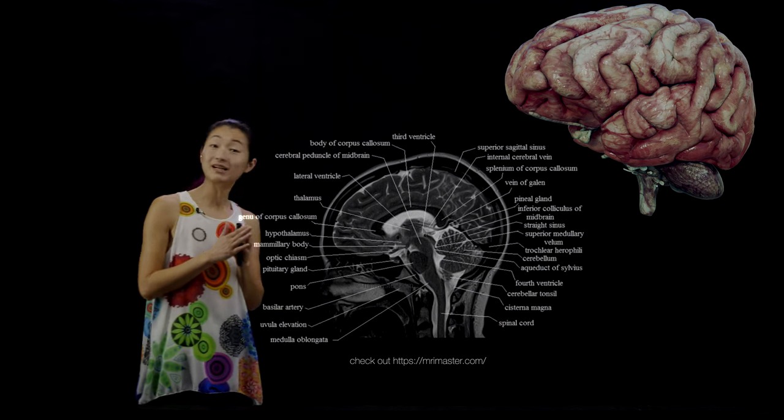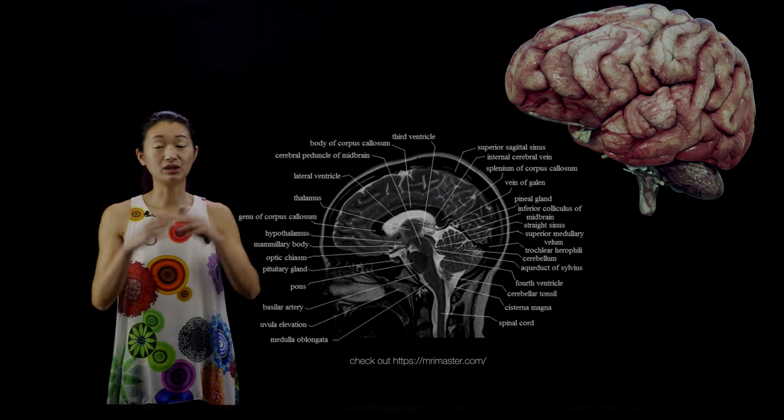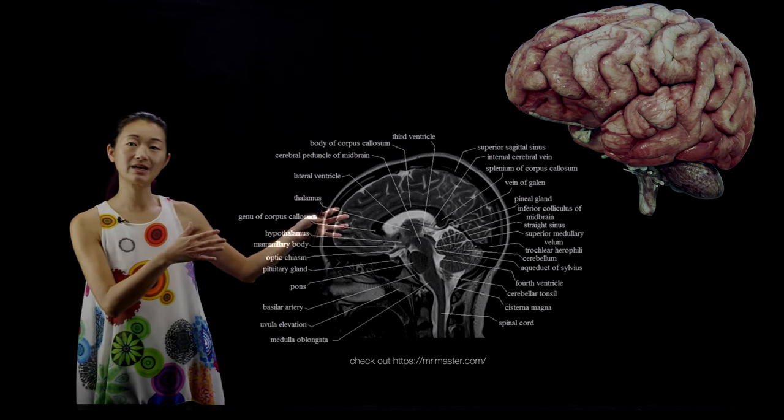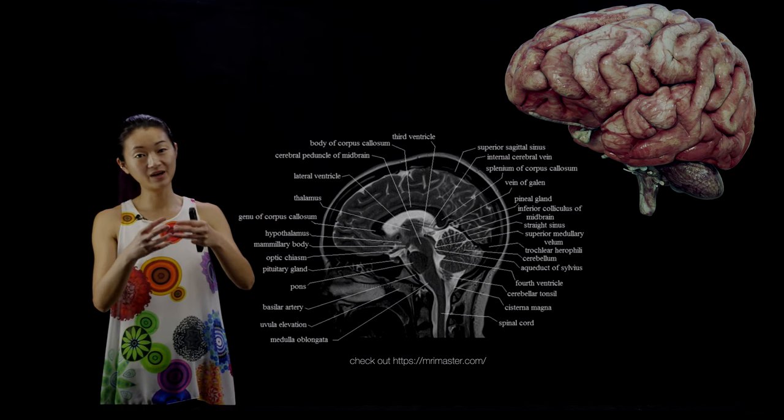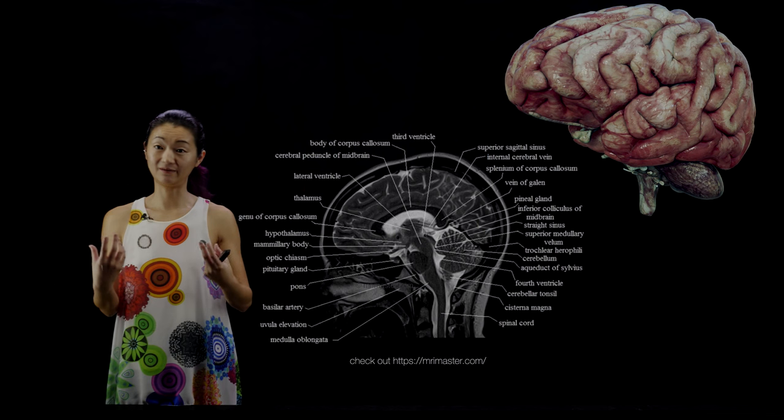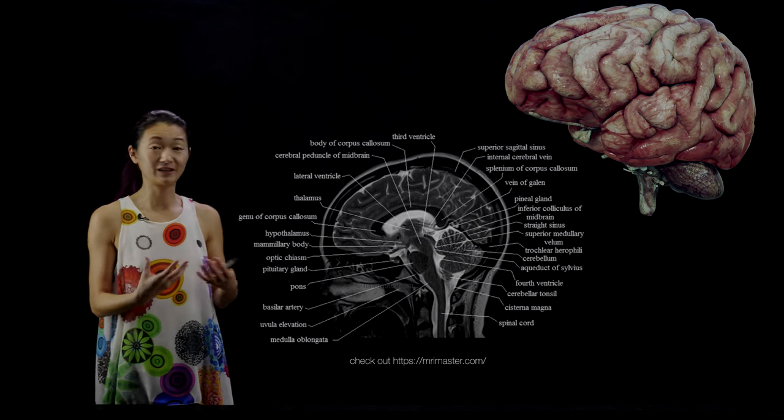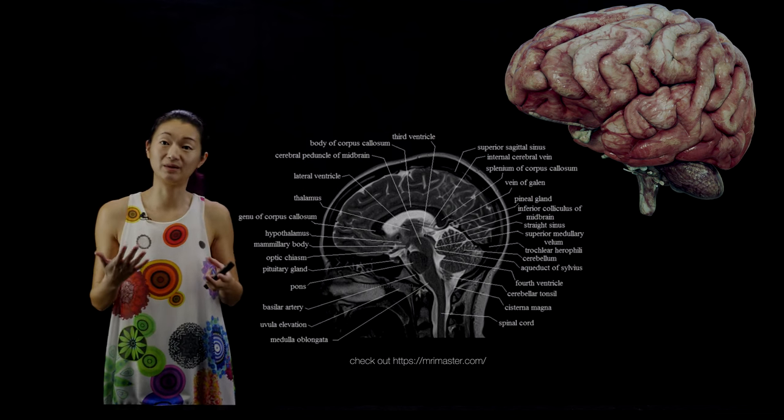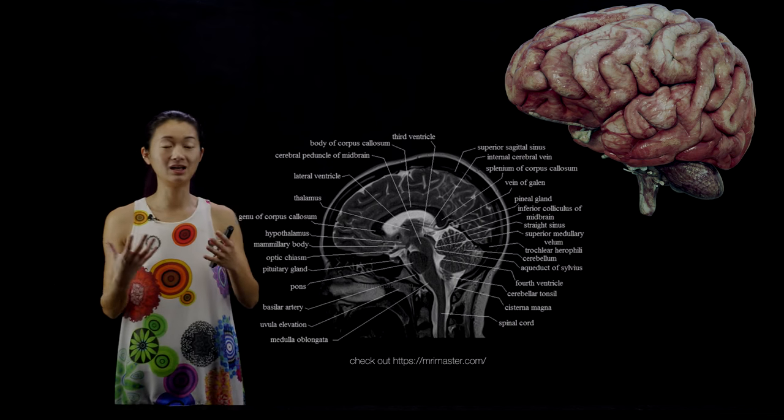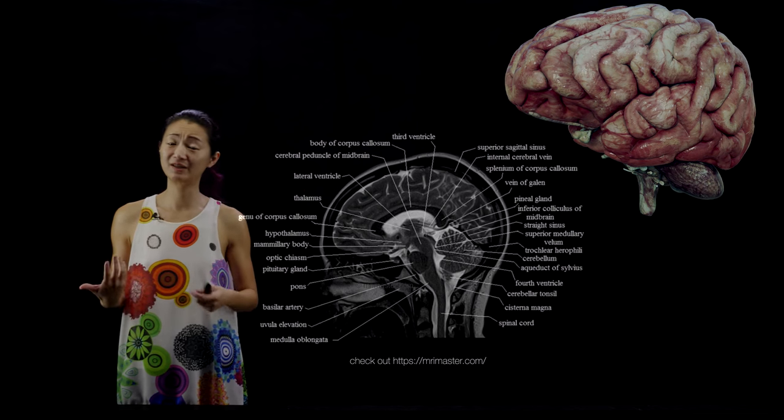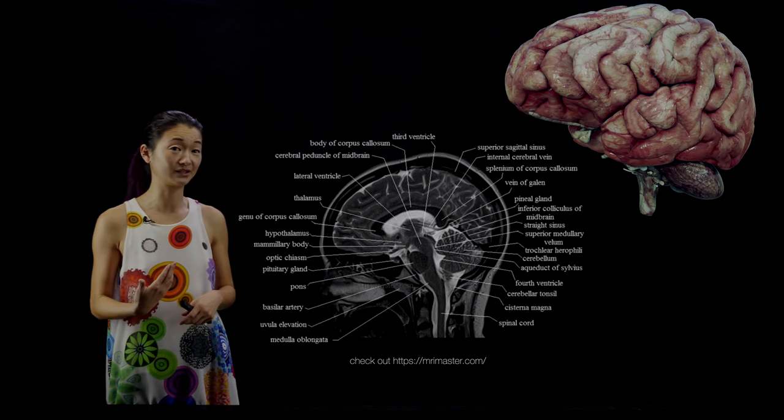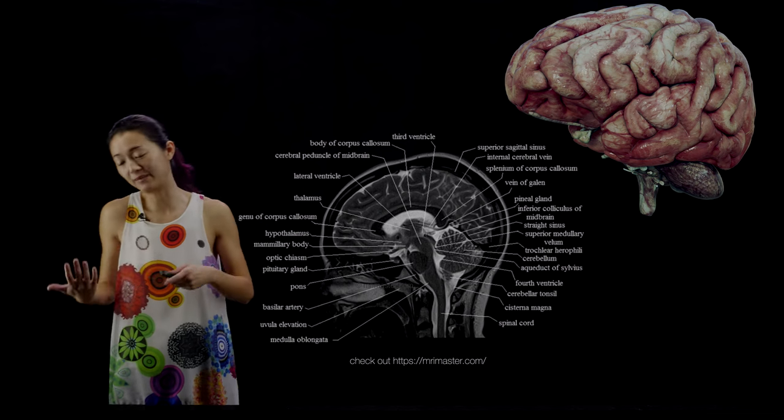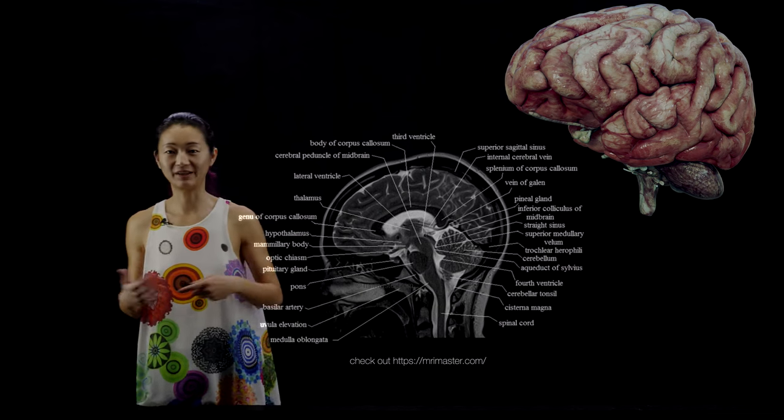The cortex is wrinkly in humans because it is actually a two-dimensional sheet that is really large, about the size of a large dinner napkin if you shook it out. The reason it's wrinkly is because it's a two-dimensional sheet that got crumpled up and stuffed on top of the mid-brain structures, so it has to be wrinkly, otherwise it wouldn't fit. Not all mammalian brains are wrinkly. If the relative area is not that big, then it isn't wrinkly. Rats and mice, for example, do not have wrinkly brains. There are even some primate brains that are not wrinkly.